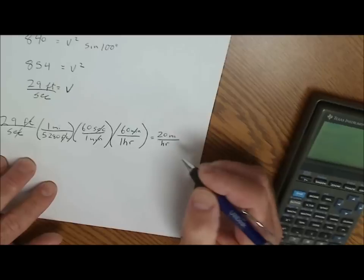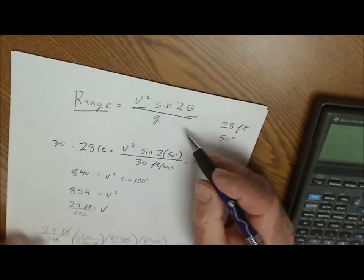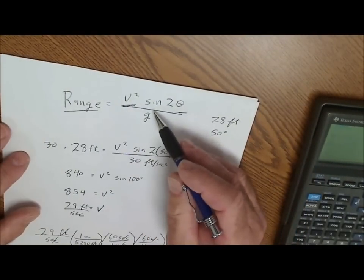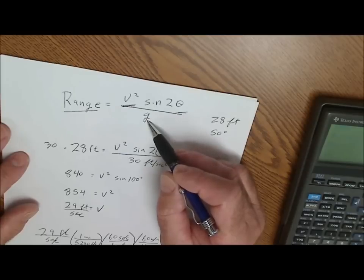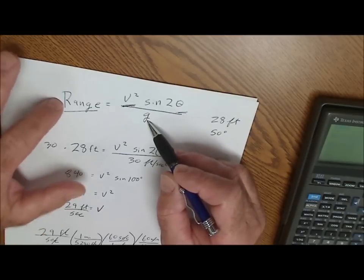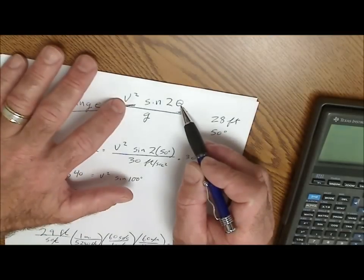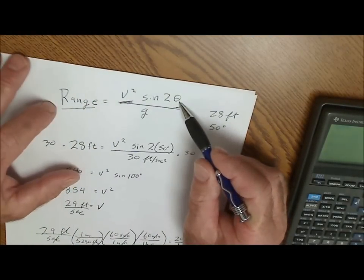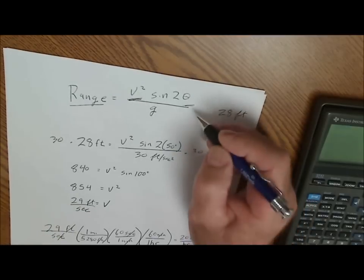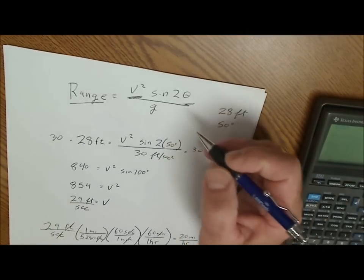It seems about right. So again, using this equation, range equals velocity squared sine of two theta divided by gravity. If I have any of the two variables, either distance or angle, I could find velocity. Or if I had velocity and angle, I could figure out distance. Of course, there's a few exceptions like friction and air resistance.